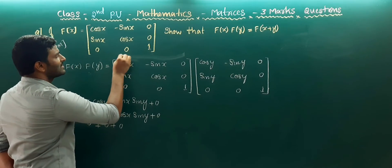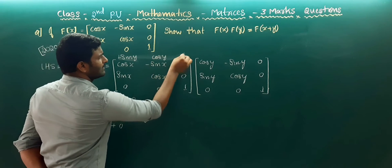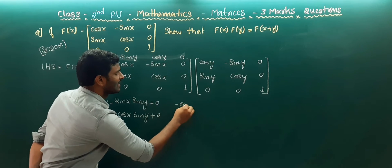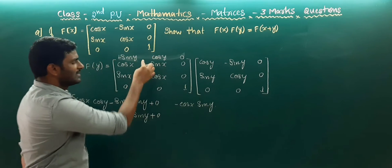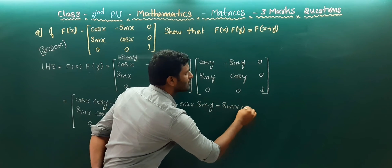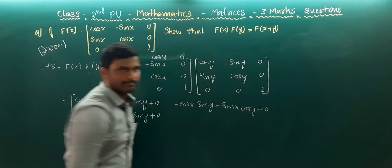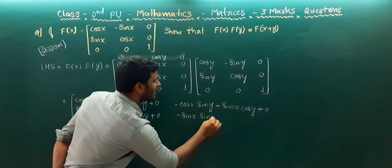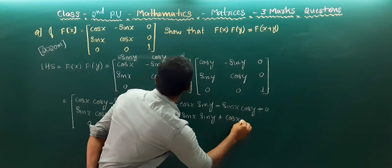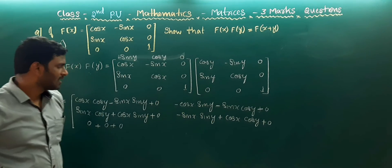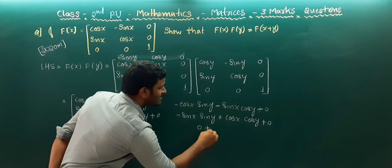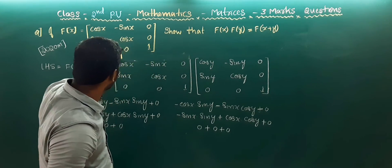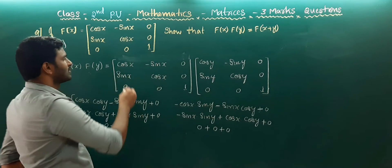Now write the second column. The second column elements are -sin y, cos y, and 0. Multiply corresponding elements: -(cos x into sin y) minus (sin x into cos y) plus 0. Second row: -(sin x into sin y) plus (cos x into cos y) plus 0. And for the third row, if multiplying with 0 the answer is 0.